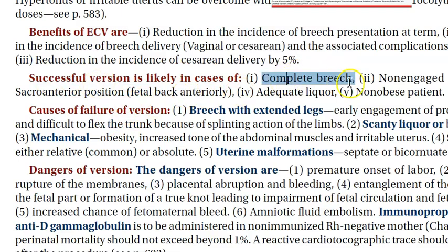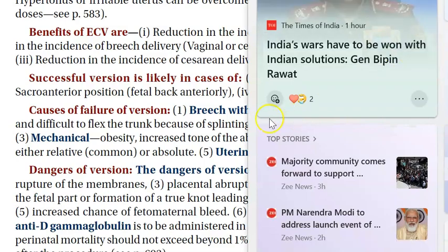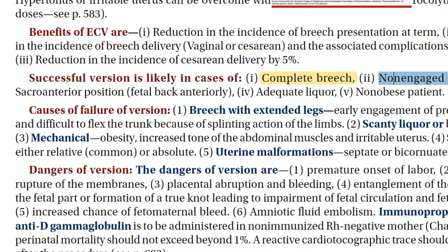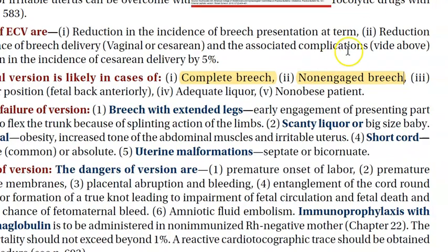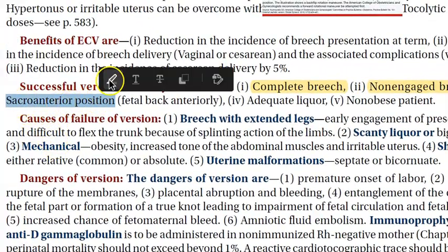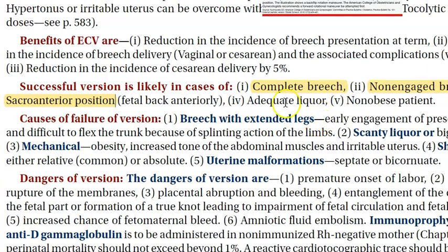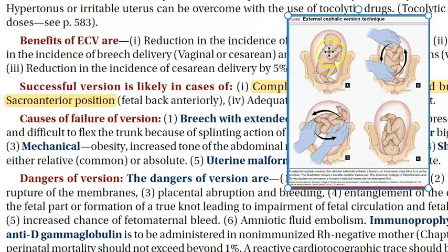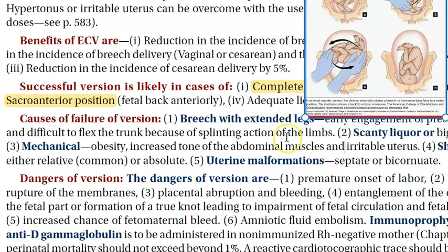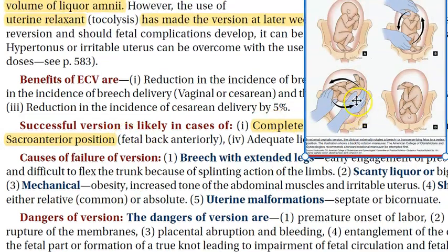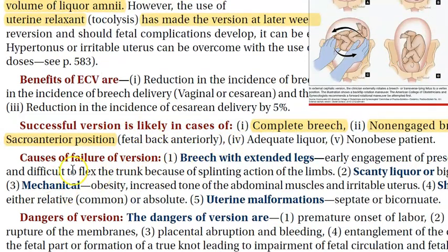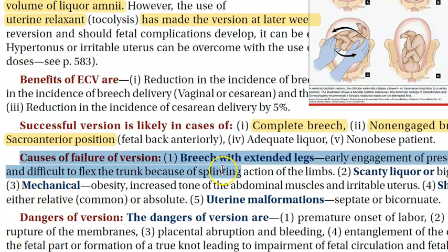ECV is more likely to be successful in cases of complete breech, where the baby is fully flexed. It also helps if the presenting part is not yet engaged, if the position is sacro-anterior, if there is adequate liquor, and if the patient is non-obese — because when turning externally you need to get hold of the fetus through the abdomen.